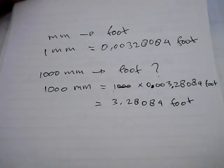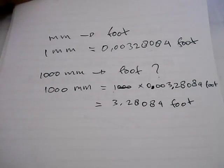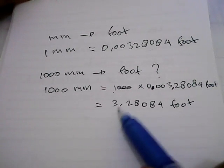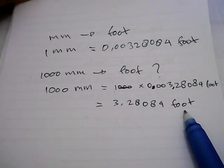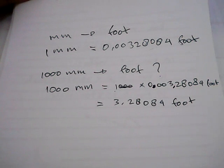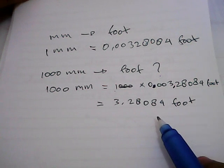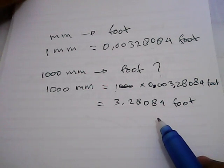So 1000 millimeters is equal to 3.28084 foot. Well, thank you for watching. If you found this video really helpful, you can share it to your friend by clicking on the share button below this video. And well, goodbye.